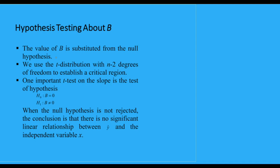So it says that the value of B is substituted from the null hypothesis. Yes, this is true. And we are going to use the T distribution with n minus two degrees of freedom. And finally, it says that one important T test on the slope is when we are going to test that B is equals to zero.